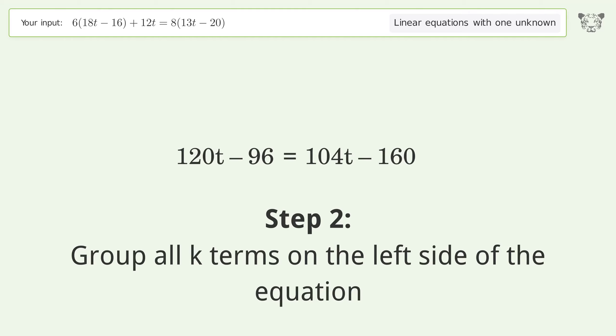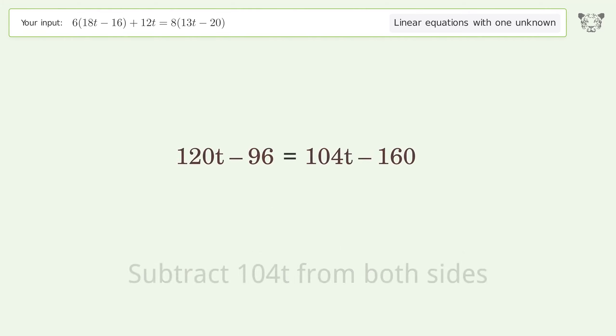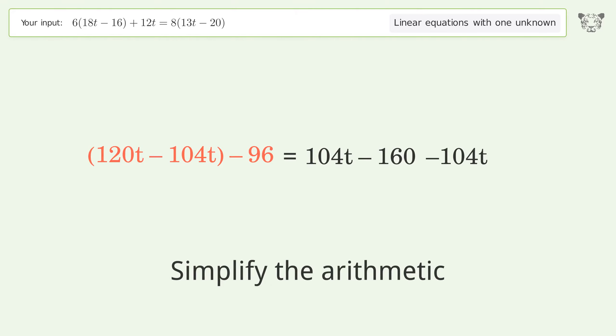Group all t terms on the left side of the equation. Subtract 104t from both sides. Group like terms. Simplify the arithmetic.